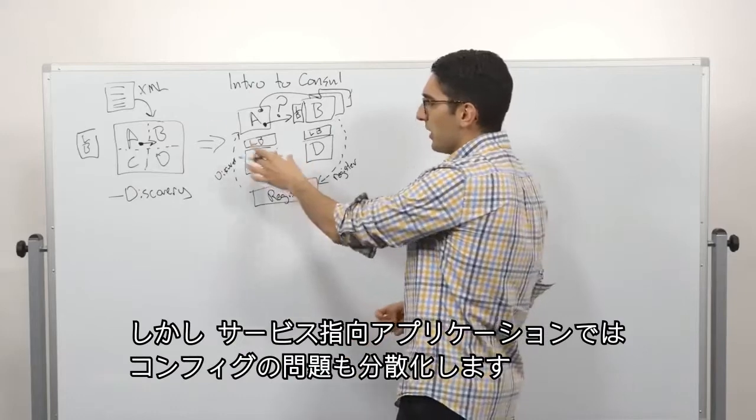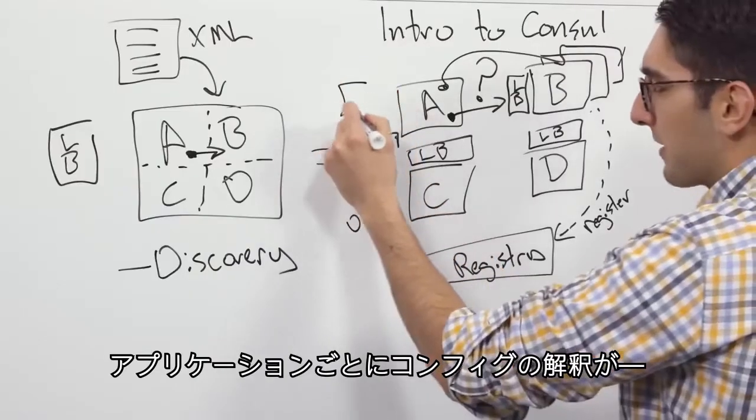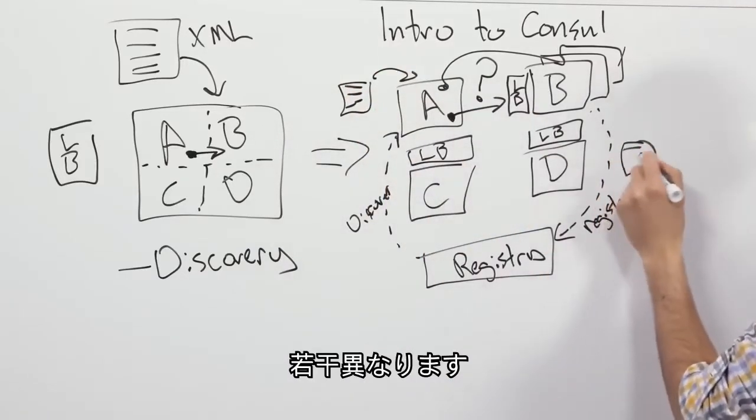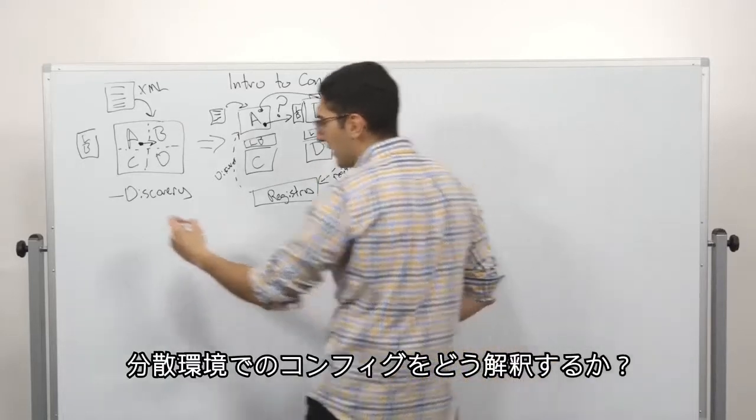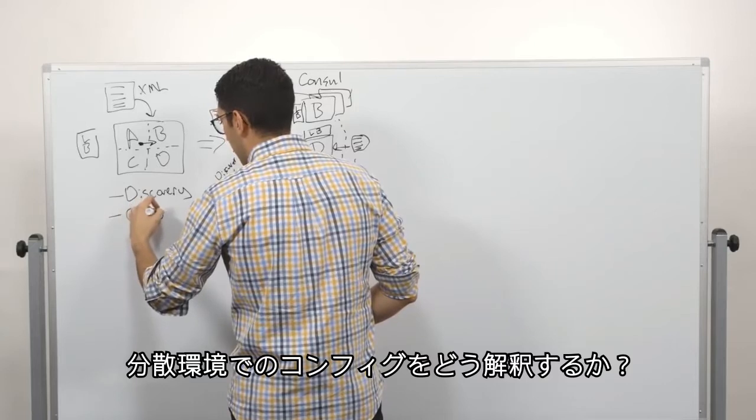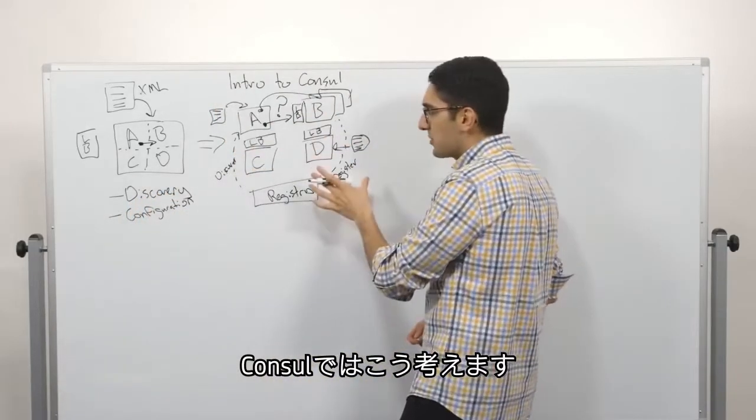Now, when we're in this world, we've sort of distributed our configuration problem. Every one of these applications has a slightly different view of what our configuration is. And so now we have a challenge here, which is how do we think about configuration in our distributed environment?